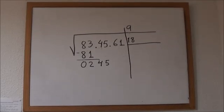Now we have to find a digit that added to 18 and multiplied by that digit, gets the closer to 245, but never going over it. We try with number 2, but we can see that we get 364. We go way over 245, so it cannot be 2, it has to be 1.